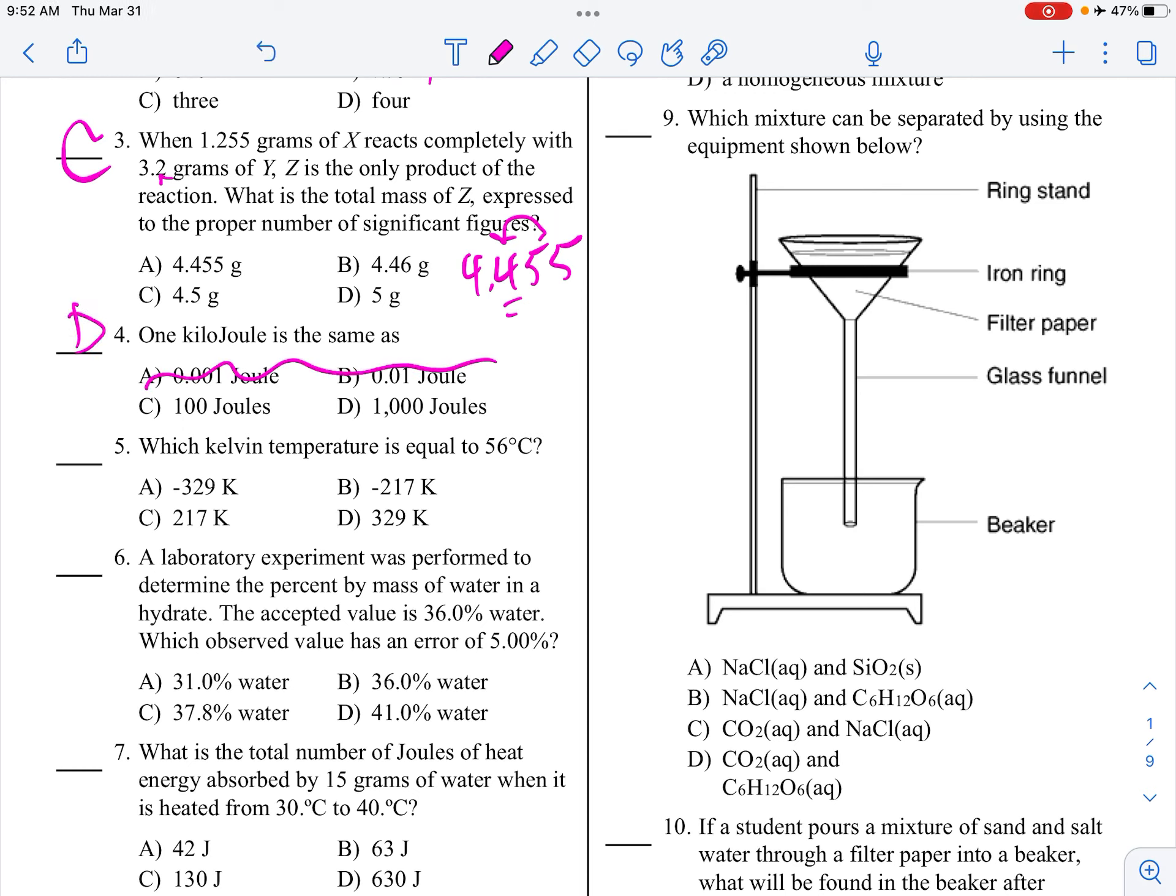So back here. So, joules of heat, MC, and I know it's 4.18 because it said water. Delta T is T final minus T initial. So that's 10. So 15 times 4.18 times 10 gives you 627. That's not a choice here, so I go with the two sig figs, which is choice D.